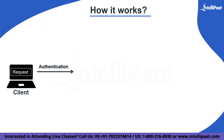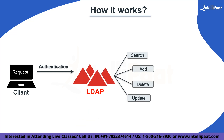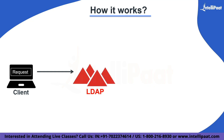The very first step is the authentication step, where the client provides credentials — usually a username and password — to confirm its identity. If the credentials are wrong, it won't connect to the server; if correct, it connects for further requests such as searching, adding, or deleting. The client specifies what data it wants to retrieve — for example, a list of tools like Tableau and Power BI. The connection is established over TCP/IP, typically on port 389 for LDAP.